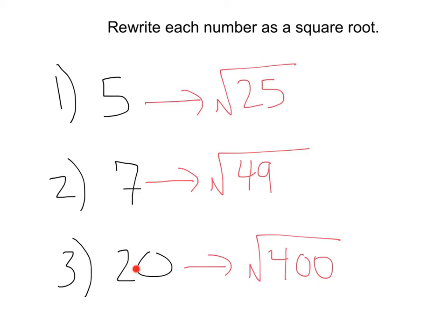So we can rewrite each of these as a square root just by squaring it and putting it under the square root.